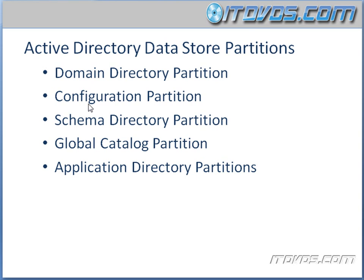The next partition is going to be the configuration partition. This partition contains configuration information for the entire forest. So things like sites, site links, and replication connections are all stored in this configuration partition. And this is replicated to every domain controller in the forest, and it's the same for every domain controller in the forest.